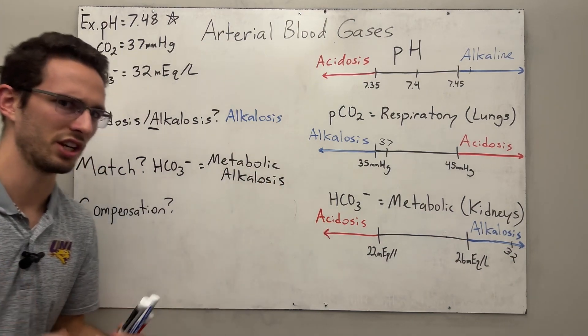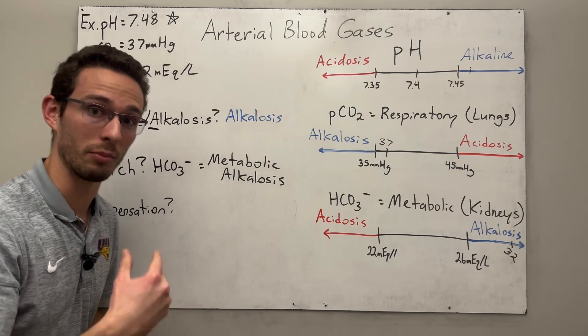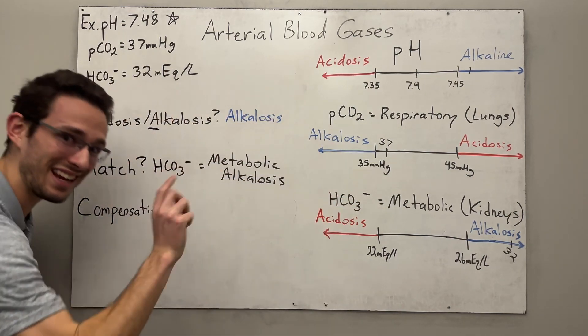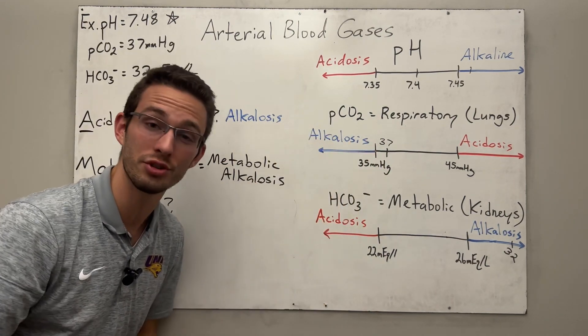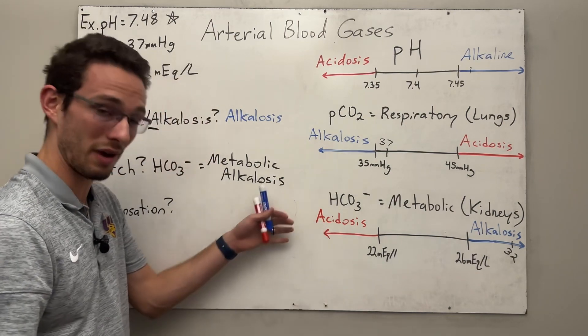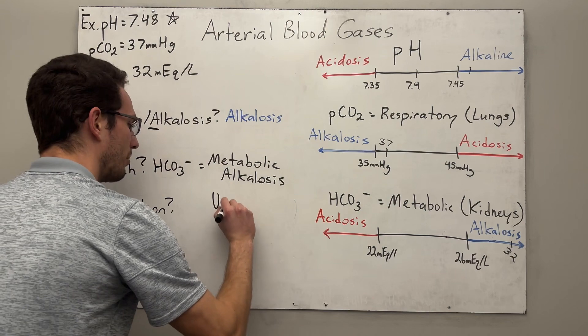And now we need to check compensation. So the compensation, we always look at the other value that wasn't the problem. So since bicarbonate was the problem, we're going to look at carbon dioxide and we see that carbon dioxide is still normal. So therefore it is not trying to compensate for the issue at hand. Therefore it'd be metabolic alkalosis uncompensated.